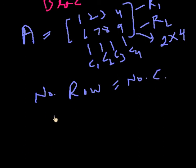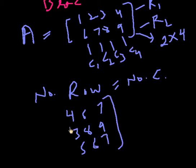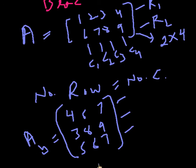Suppose 4, 6, 7, 3, 8, 9, 5, 6, 7. This is a square matrix because the number of rows and columns are equal, 3 into 3. Thank you very much.